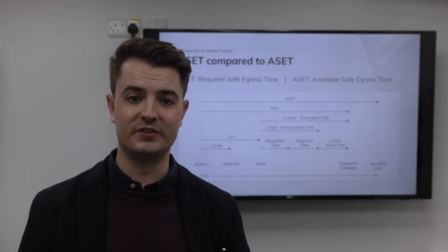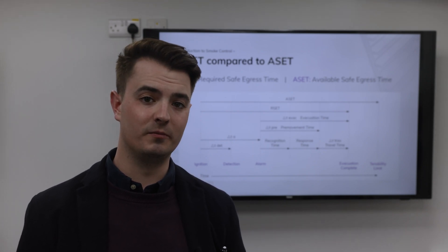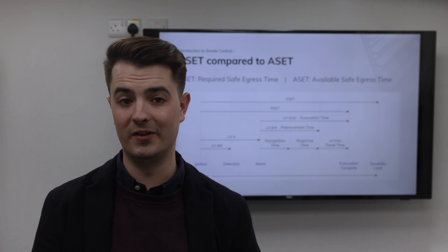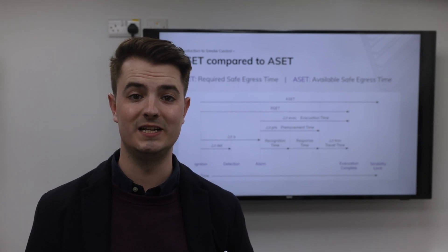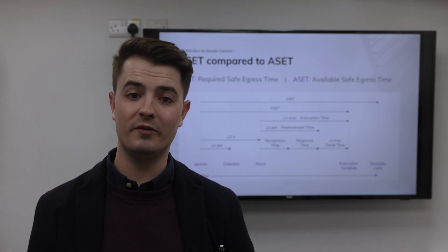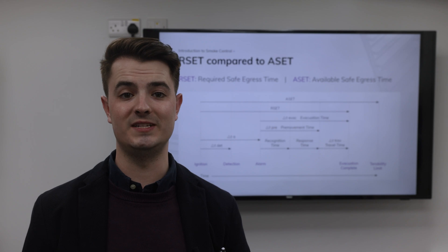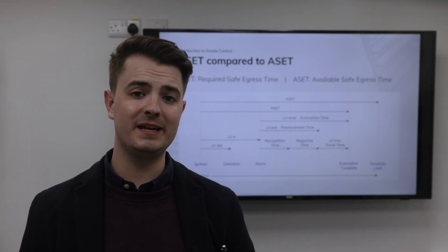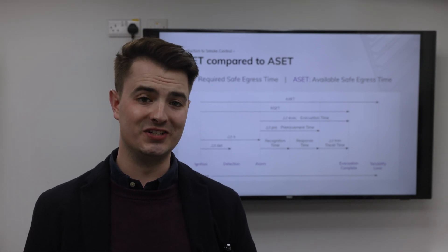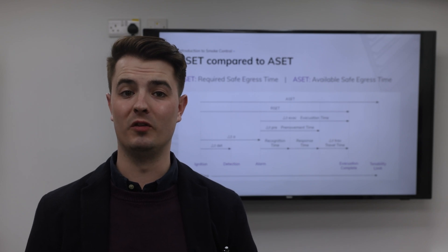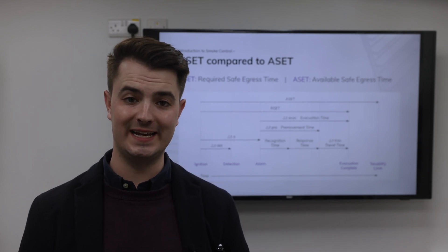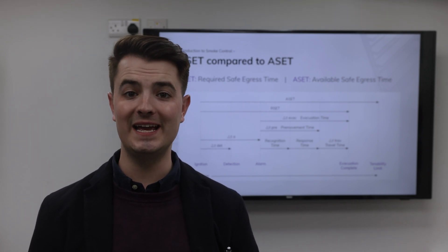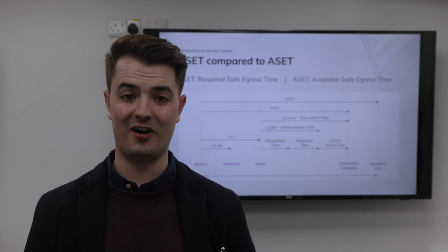To implement fire safe designs that are not compliant with current legislation, the fire engineer must prove that the level of fire safety in the proposed design is equivalent to the level of safety outlined in the current building regulations — basically making sure that whatever they suggest is as good or better than what the regulations dictate. This brings us to our main topic for today: ASET and RSET.